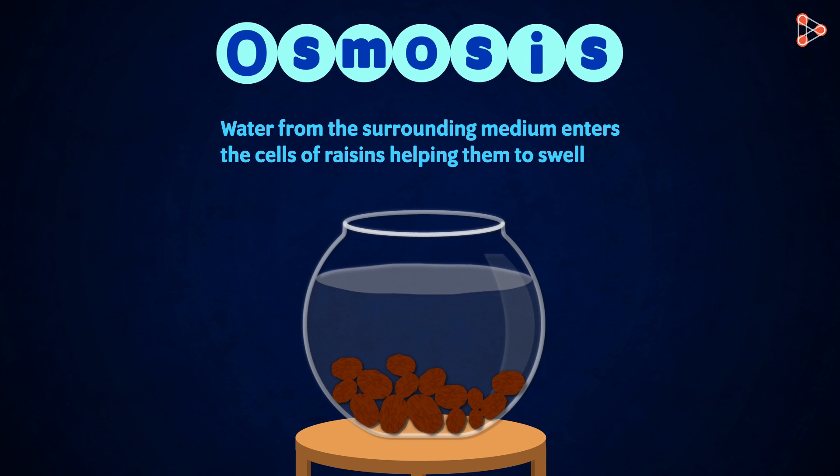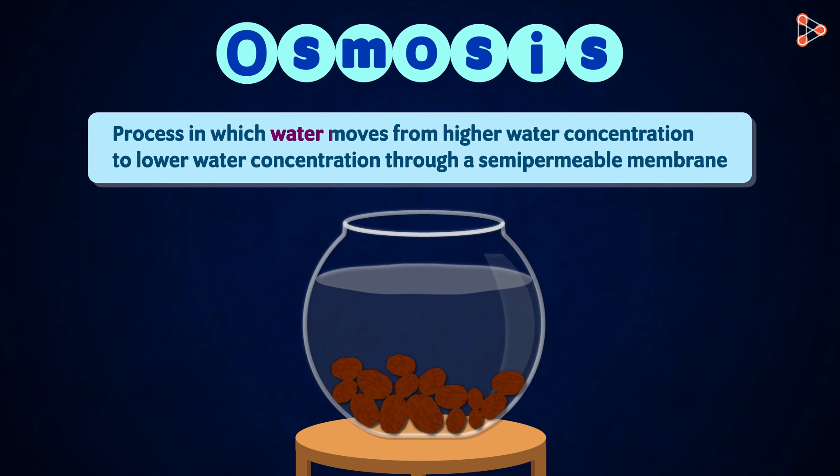Can we define osmosis once? It is simply defined as the process in which water moves from higher water concentration to lower water concentration through a semi-permeable membrane.